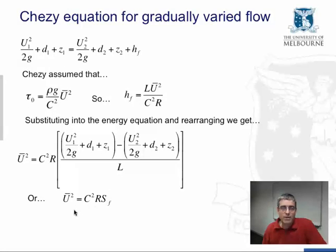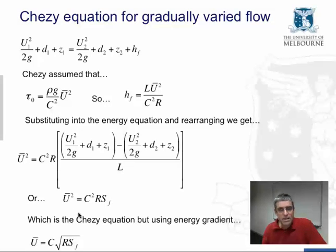And so we have this equation, and if we take the square root of both sides, we get the Chezy equation, except the gradient is not the bed gradient, or water surface gradient in this case, it's the energy gradient, S sub f. So we can see that Chezy's equation does indeed apply under conditions of gradually varied flow, but we must use the energy gradient under these conditions.